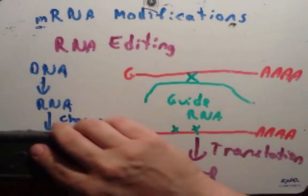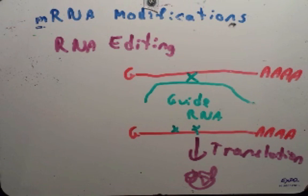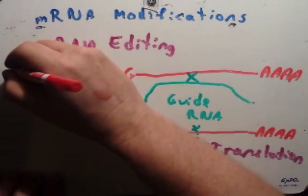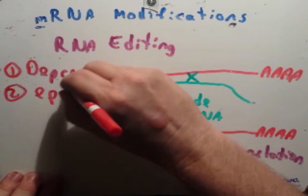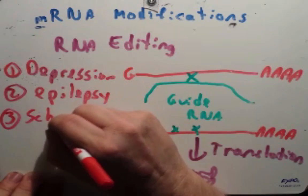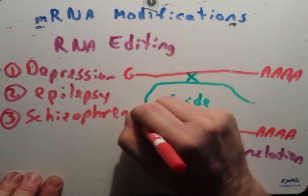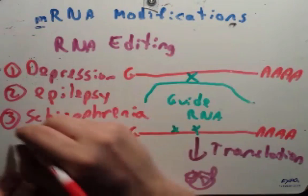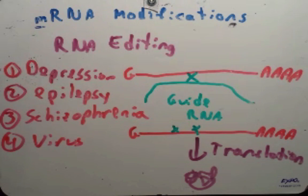After their discovery, various diseases were being linked to RNA editing or failures in RNA editing. Some of these diseases were depression, epilepsy, schizophrenia, and some viruses will take advantage of these guide RNAs to produce proteins that the virus needs.